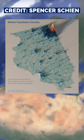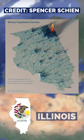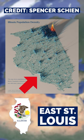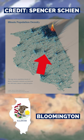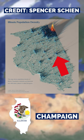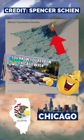So let's look at some unique maps. This is a population density map of the US state of Illinois. Some notable parts of it are the metro area east of St. Louis, Springfield, Peoria, Bloomington, Champaign, and of course Chicago itself.